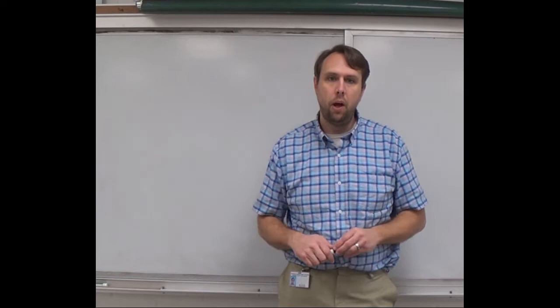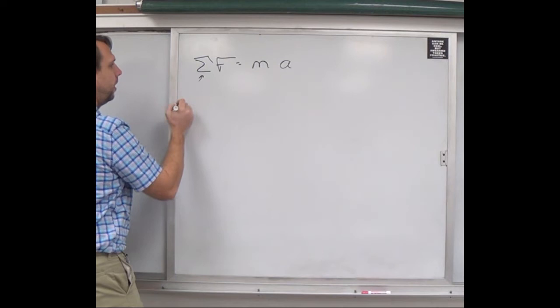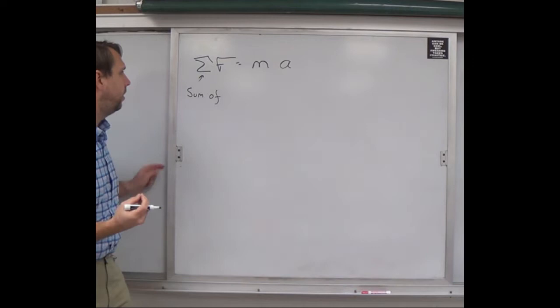That is the first law. The second law is a mathematical one. It says: the sum of the forces acting on an object is equal to mass times acceleration. Here, this is the Greek letter sigma, which means 'the sum of.' That implies there could be more than one force, and you'd have to add up every single one acting on the object.